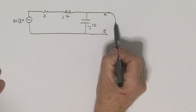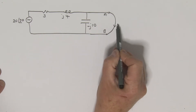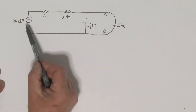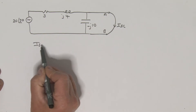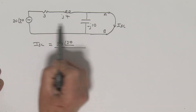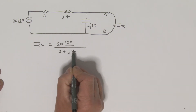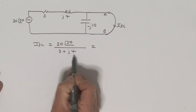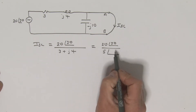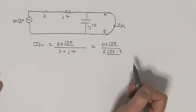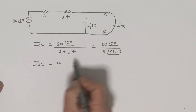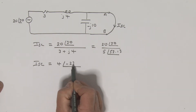What I want to do now is find the short circuit current. I'm going to put a short between my terminals A and B. Now let's think about this — is there any current going down here? No, it is shorted out. So really, this is a very simple circuit to deal with. That short circuit current is going to be equal to that source, which is 20 at an angle of 30, divided by this impedance here, which is 3 plus J4. If we convert this to its polar representation, we've got 20 angle 30, and in the denominator we've got 5 at an angle of 53.13 degrees. So my short circuit current is equal to 4, at an angle of minus 23.13.